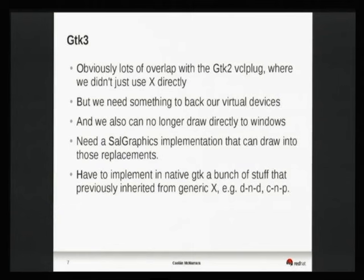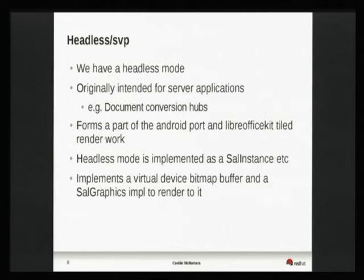We could no longer use the virtual device support that in the GTK2 case was inherited from X11 and used pixmaps, so we had to replace all that as well. What we replaced it with, basically, is we reused the code in the headless backend. The headless backend — the SVP, the Starview portal backend — previously existed as a headless mode used especially for converting documents. Over time, it's been repurposed to become the basis for the Android port and the LibreOffice kit port. For example, tiled rendering will render to this headless backend. It is a full VCL plug, but most things were stubbed out — there are no true top-level frames.